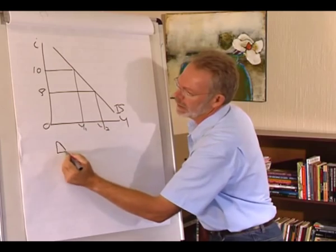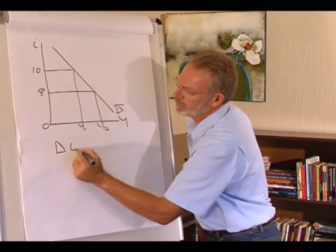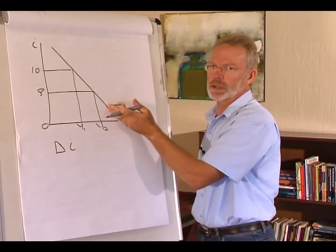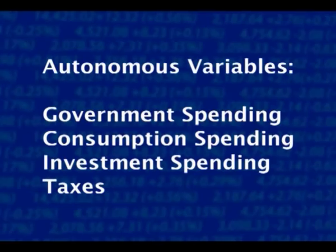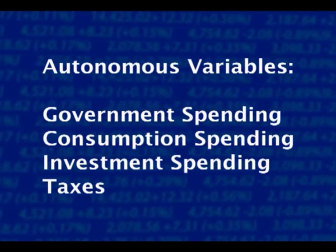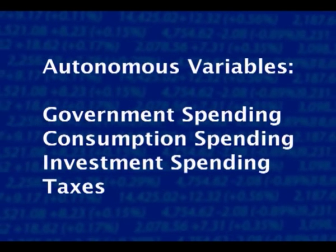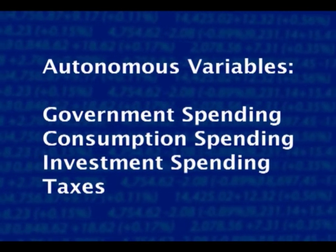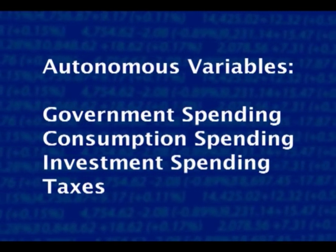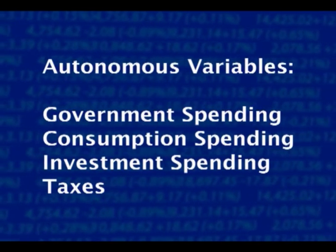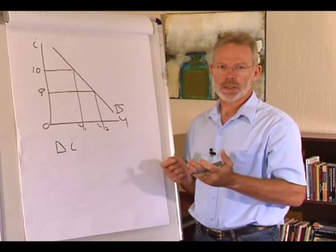So a change in the interest rate causes a movement along the IS curve. If any of the autonomous variables that has an effect on the demand for goods and services change, we will have a shift of the IS curve. How does that work?